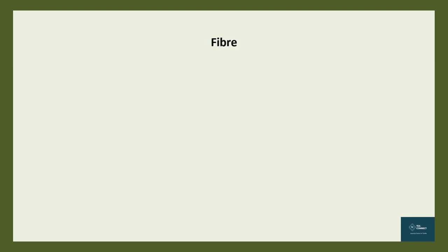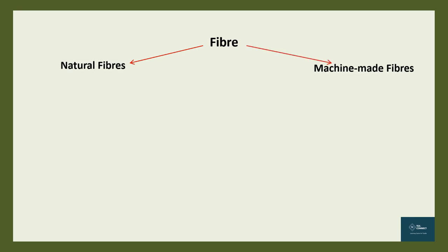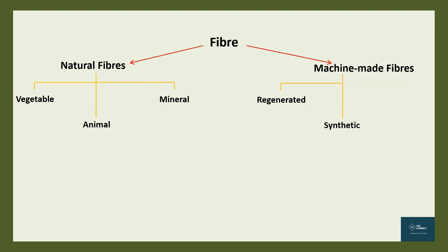Textile fibers are broadly classified into natural and machine-made fibers. The fibers that are of natural origin are natural fibers, which are further divided into three categories: vegetable fibers, animal fibers, and mineral fibers. The machine-made fibers are synthesized and processed artificially and are further divided into regenerated fibers, synthetic fibers, and inorganic fibers. Now let us have a look at the classification of natural fibers in detail.